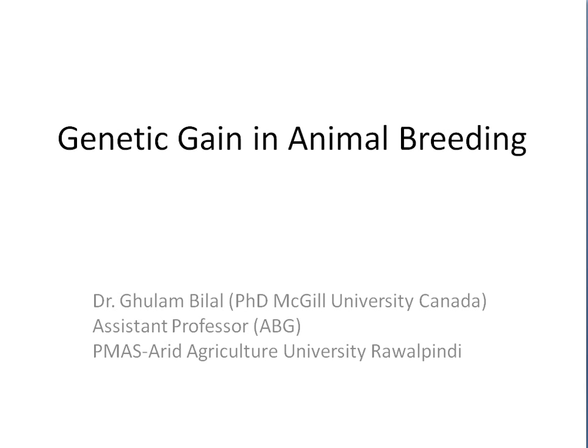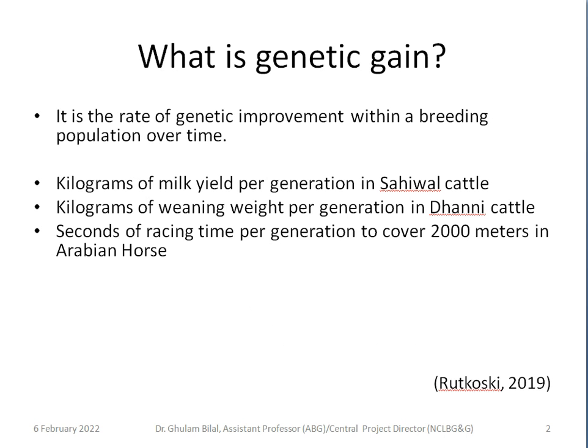In this video we will talk about genetic gain in animal breeding. Genetic gain is the rate of genetic improvement within a breeding population over time. Examples include kilograms of milk yield per generation in Sahiwal cattle and kilograms of weaning weight per generation in Dhani cattle.